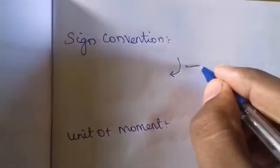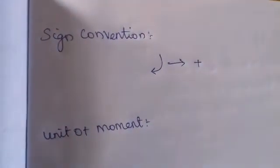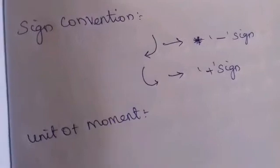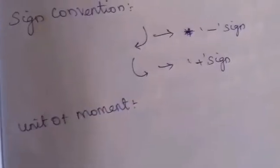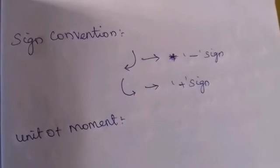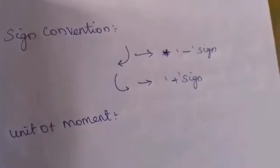Next is sign convention. For moment: clockwise direction is given a negative sign, and anticlockwise direction is given a positive sign. So, at a given point, a moment in the clockwise direction has a negative sign, and a moment in the anticlockwise direction has a positive sign.